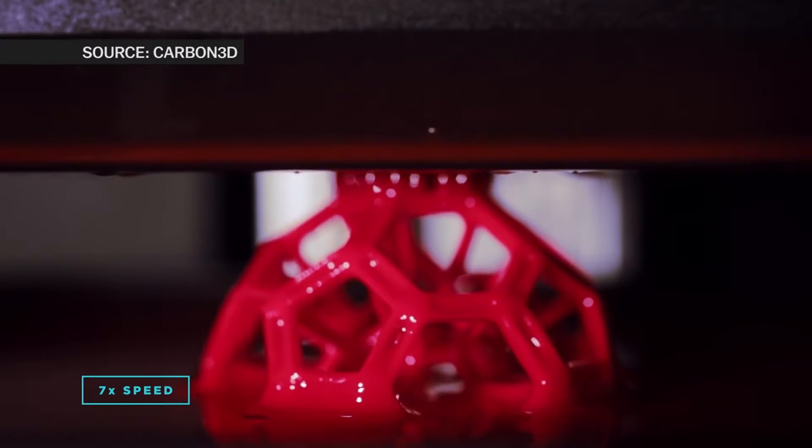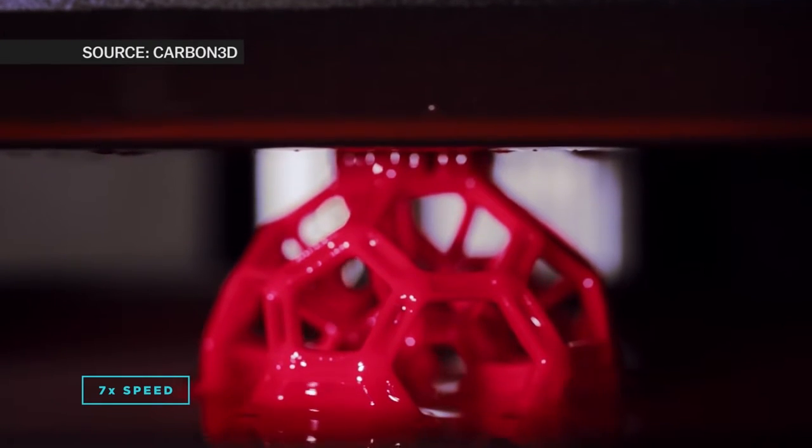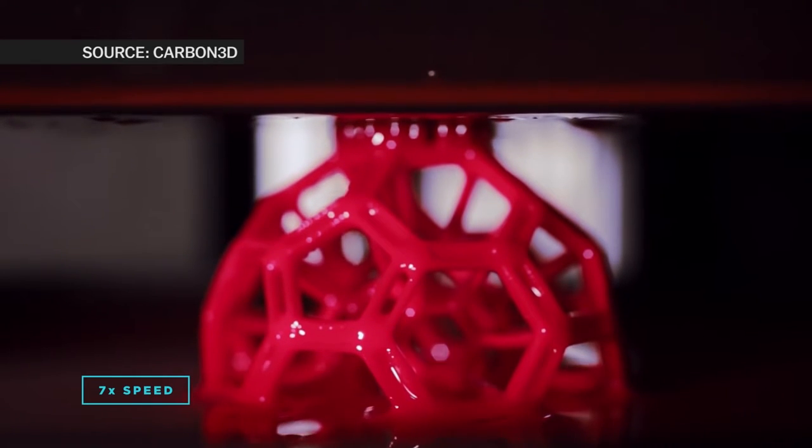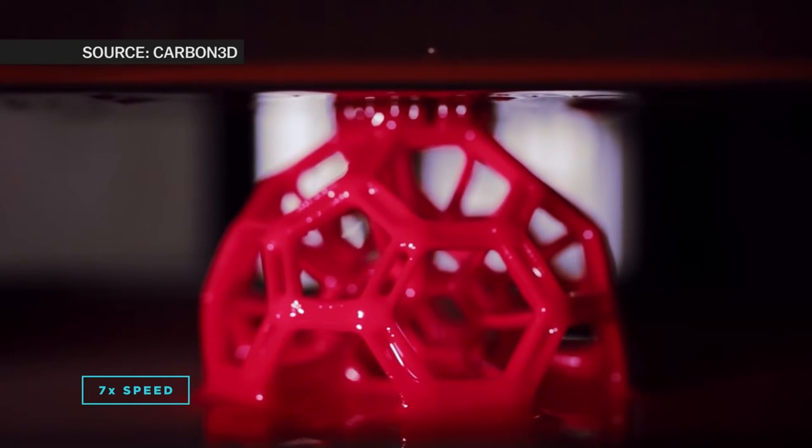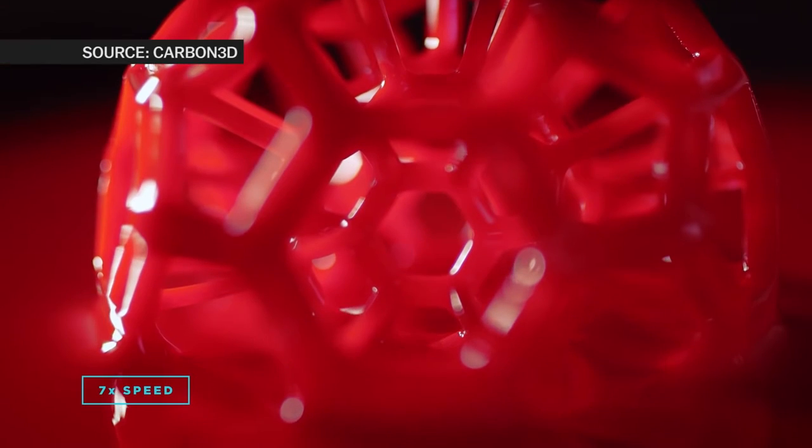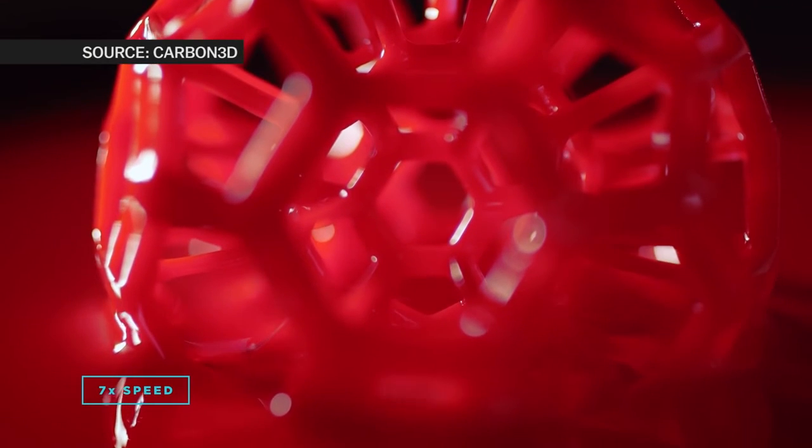So as the platform slowly moves upwards the projector moves through the different images, the different cross sections, and that causes the object to form in the shape you want. Wherever there's ultraviolet light hitting it that's where the plastic solidifies.